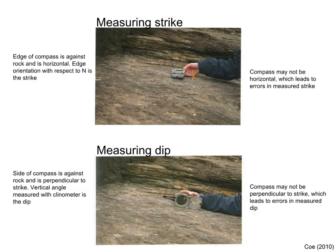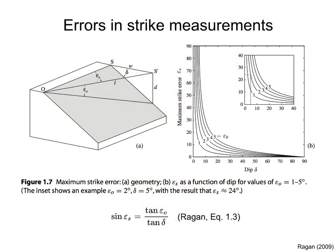This figure shows how to measure the strike and dip of a plane with a compass. For the strike, we need to find with the compass a horizontal line on the plane. For the dip, we need to find the line of maximum inclination on the plane. Compass measurements have errors. The figure to the left shows the error in strike, epsilon_s, for a small error in the horizontal on the plane, epsilon_0. This equation relates these errors — remember, delta is the true dip. The equation is graphed in the figure to the right.